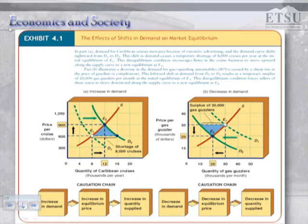The panel on the right shows the effect of a decrease in demand. Because the price of gas — a complementary good — increases, there is a decrease in demand for gas guzzlers, such as big SUVs. A decrease in demand is illustrated by a leftward shift of the demand curve from D1 to D2. A decrease in demand results in a decrease in the equilibrium price and a decrease in the quantity supplied — a lower price and fewer quantities exchanged in the market.